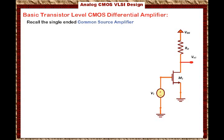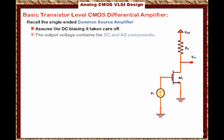In this particular circuit, we assume the DC biasing is taken care of — we are not going to worry about it. Also remember that the output voltage for the common source amplifier has two components: a DC component and an AC component. The DC component is easily evaluated.